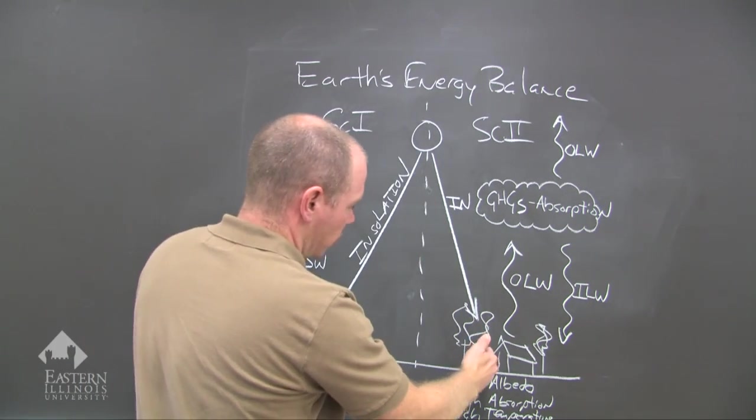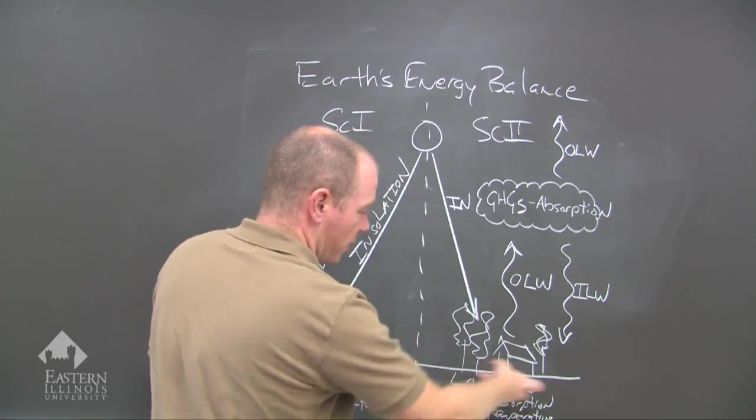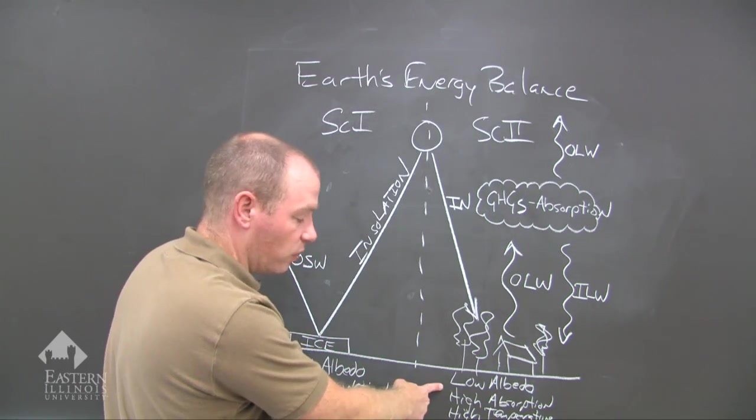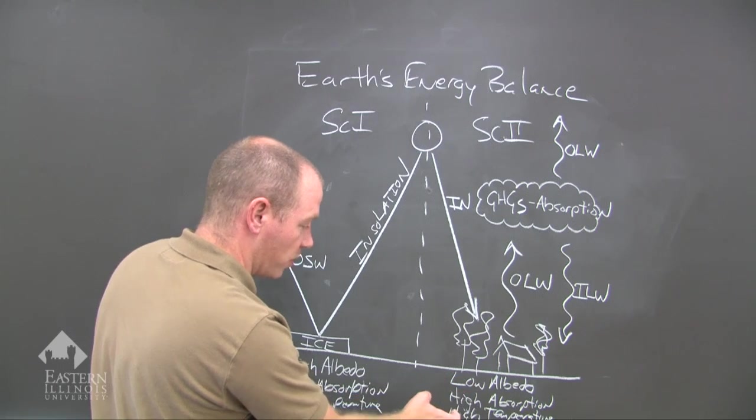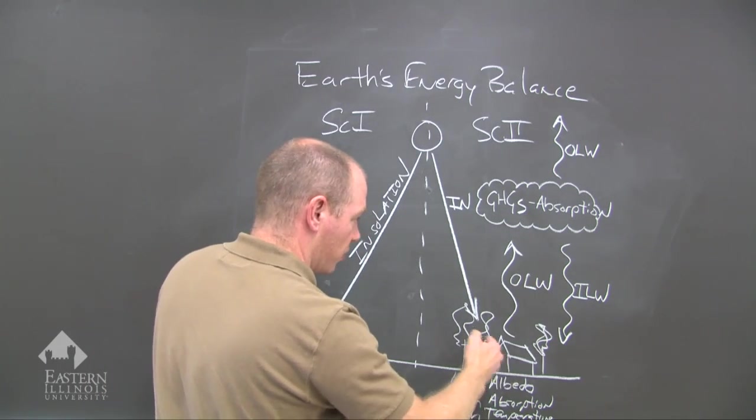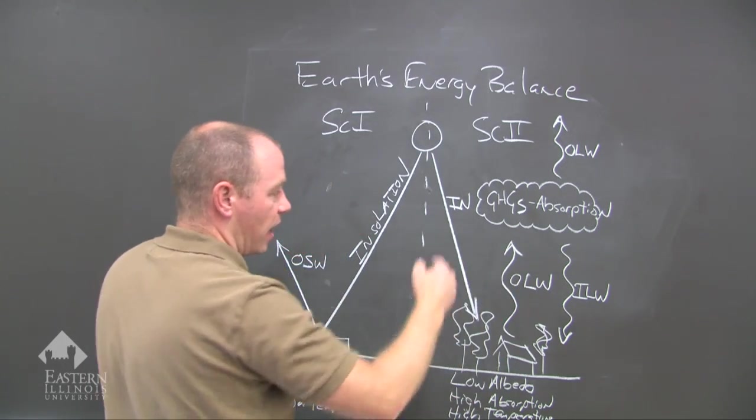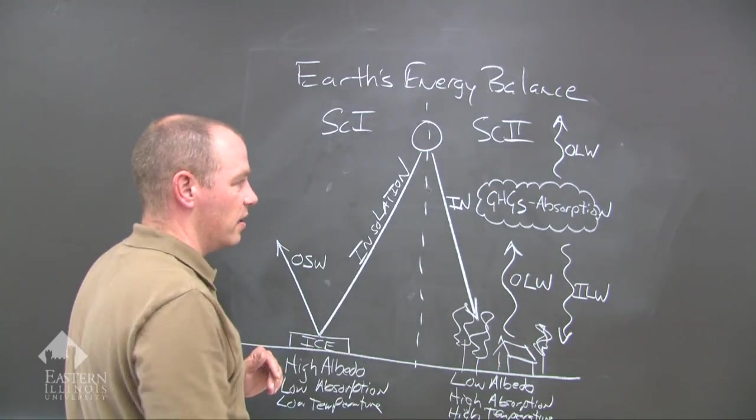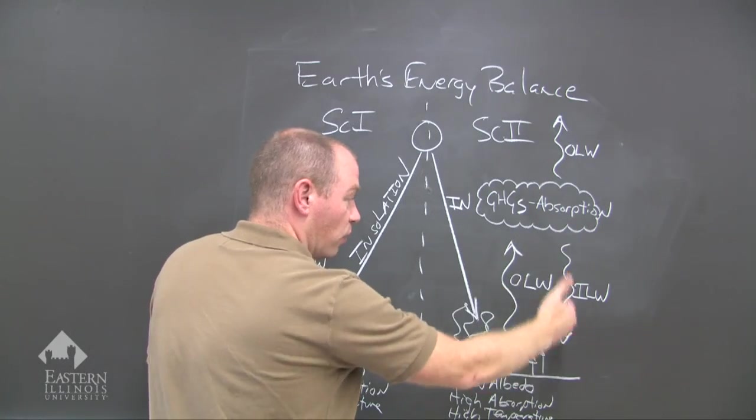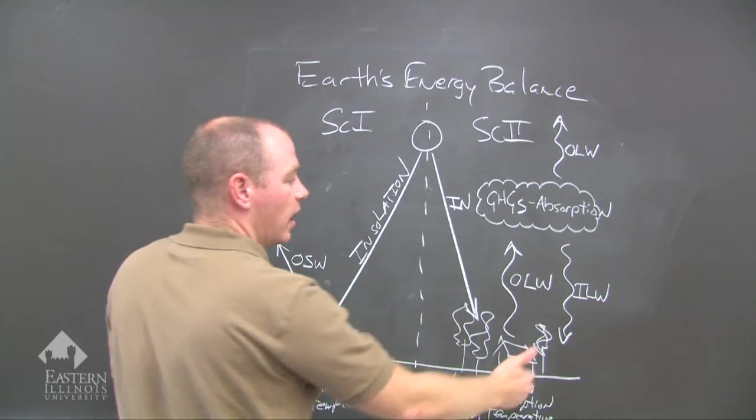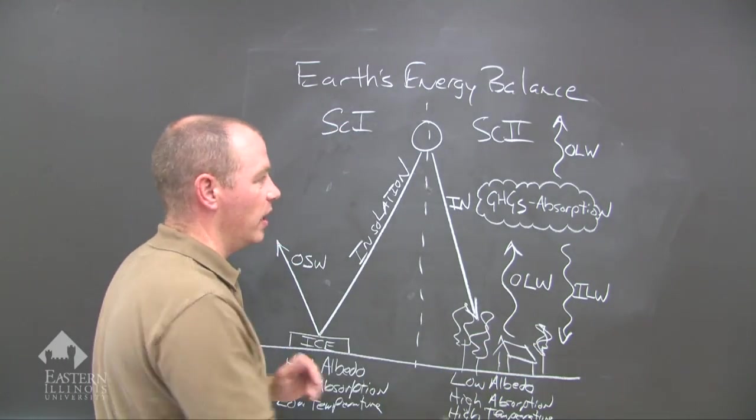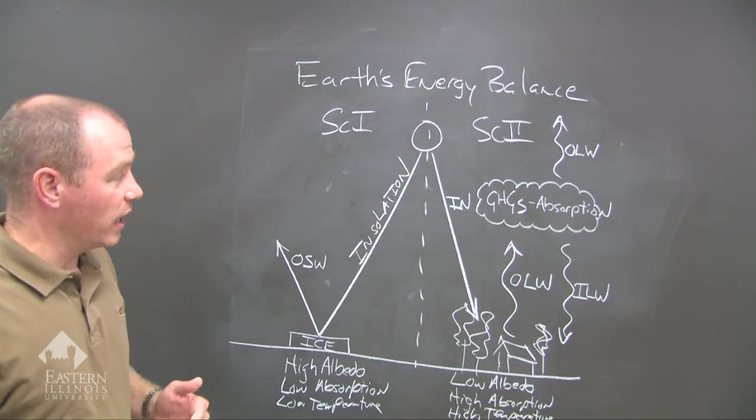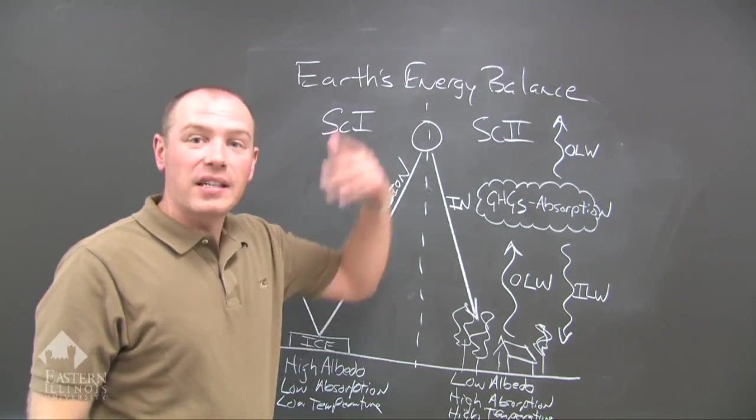Scenario two, you have insolation that gets absorbed by the surface because it's low albedo. Low albedo results in a high absorption, which results in a high temperature. That temperature then is emitted by outgoing longwave radiation. It's absorbed again by the greenhouse gases, which then re-emits back to the surface as incoming longwave radiation. And at the same time you have outgoing longwave radiation so that you can release some of that heat.